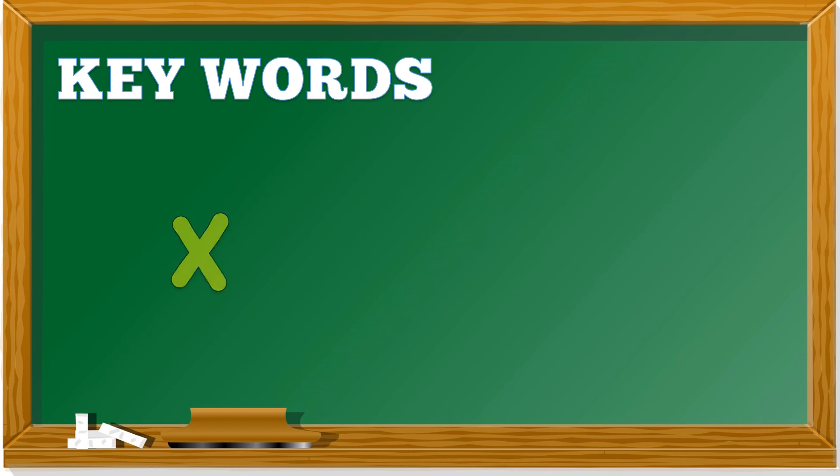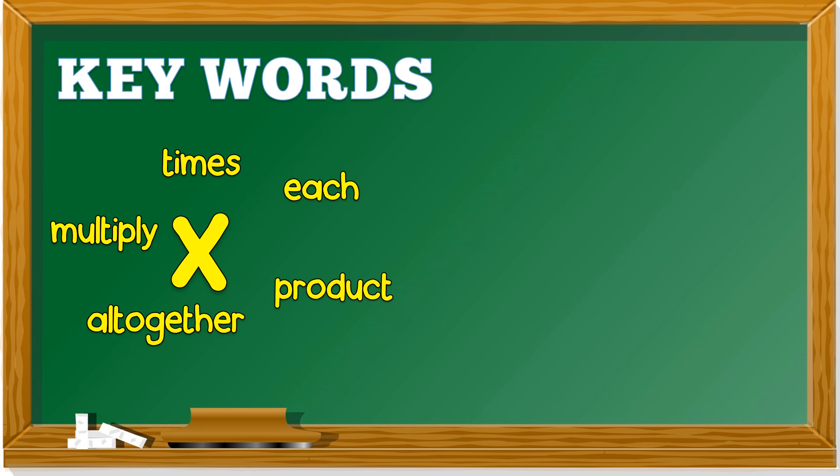We need to remember certain keywords. When you see these keywords, then you know whether it's multiplication or division. Let's take a look at the keywords for multiplication. Multiply, times, each, product, all together. So if you see one or two of these keywords together in the situation, then most likely you need to do multiplication.